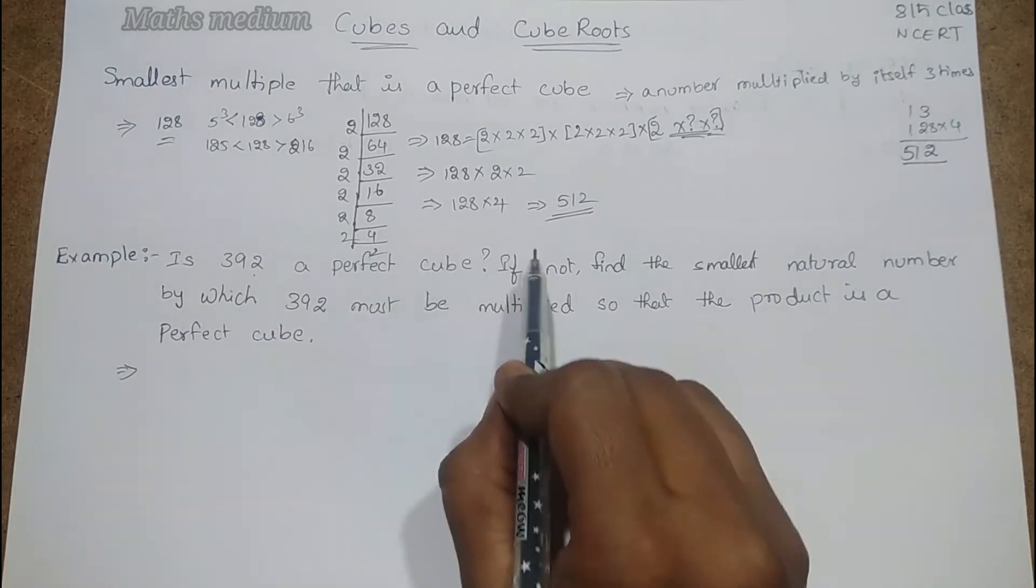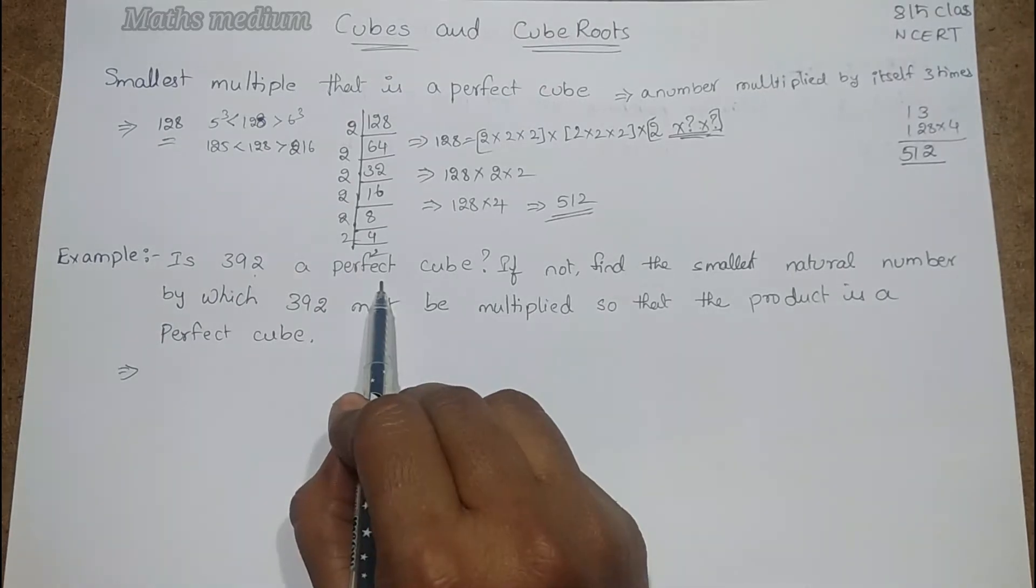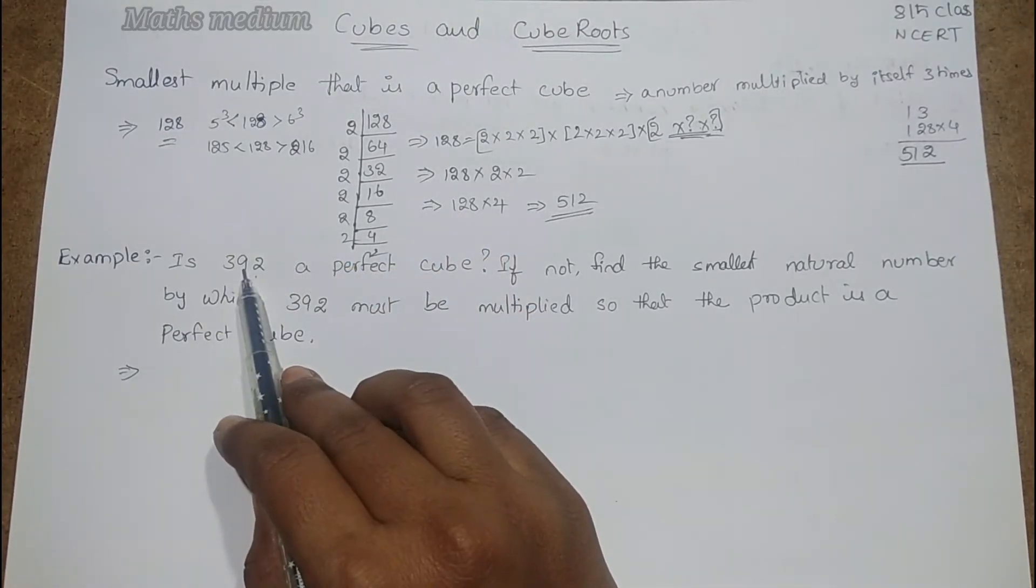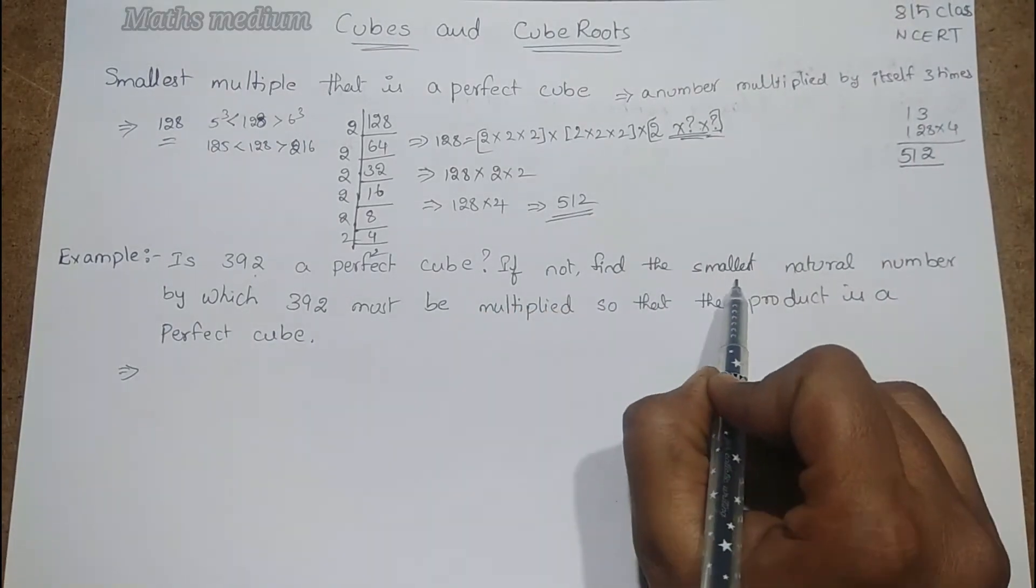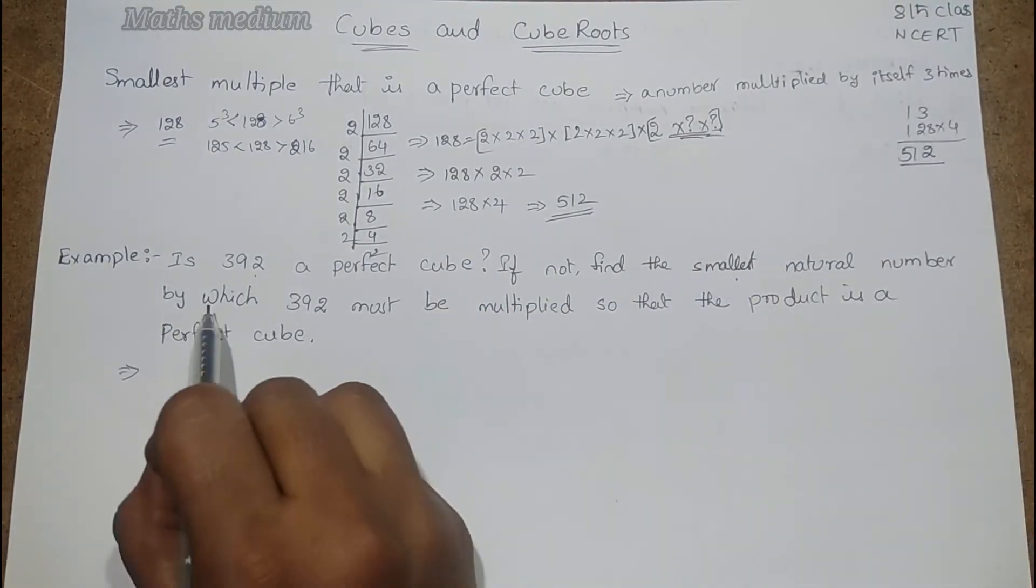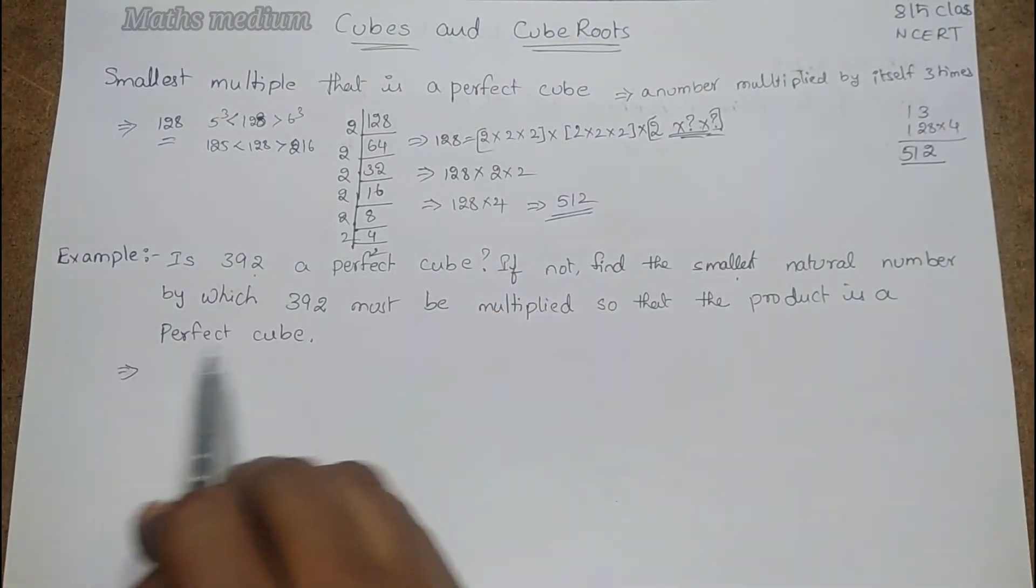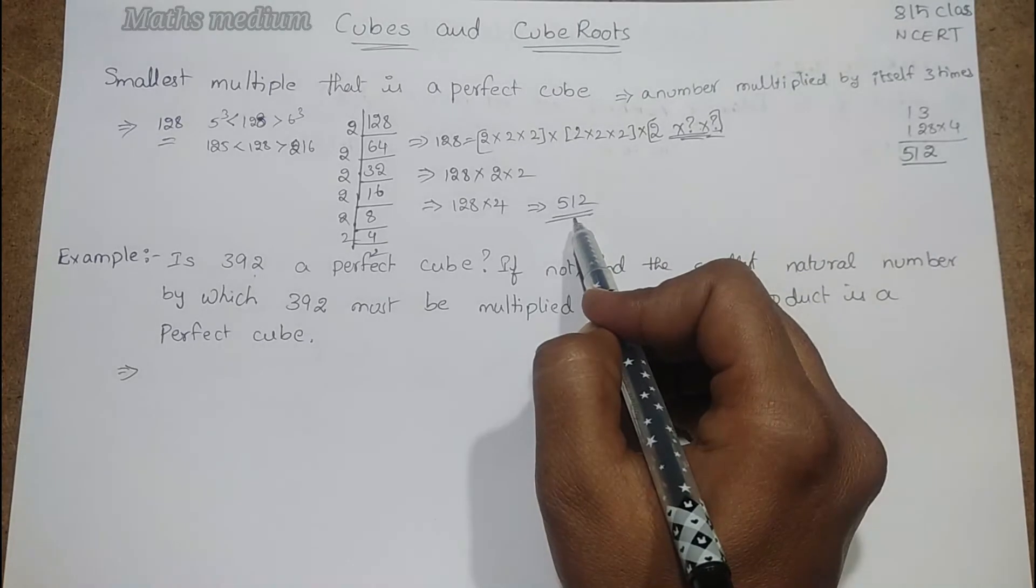We have to make a prime factorization for 392 and first of all check if it is a perfect cube or not. If this number is not a perfect cube, then we have to find the smallest natural number by which 392 must be multiplied so that the product is a perfect cube.